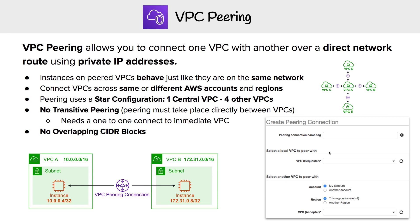We can specify whether it's in my account or another account, and this region or another region. So you can see that VPC peering allows VPCs from the same or different regions to talk to each other.